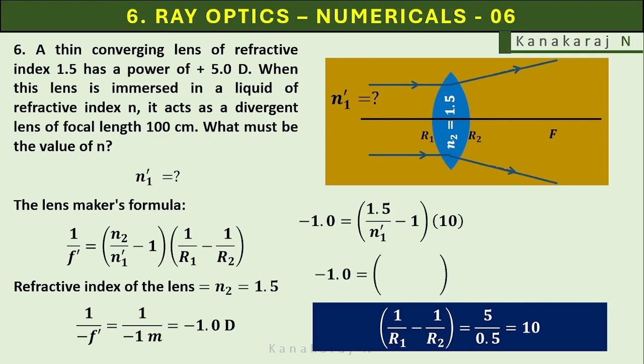Simplifying this value, we get minus 1.0 equals 15 upon n1 prime minus 10. The minus 10 goes to the left hand side and becomes 10 minus 1.0 becomes 9 equals 15 upon n1 prime.